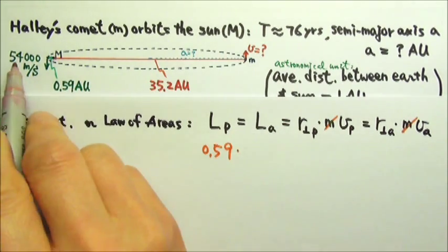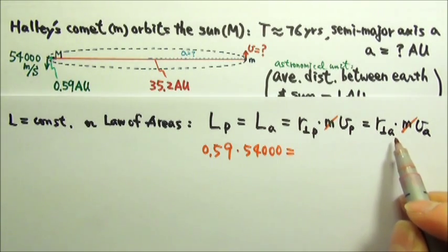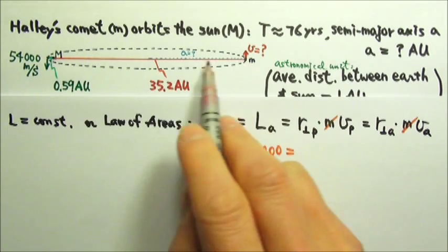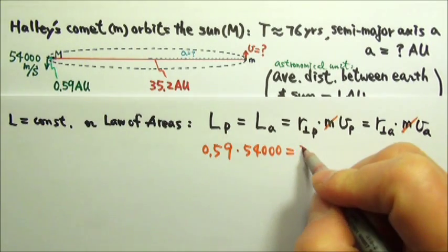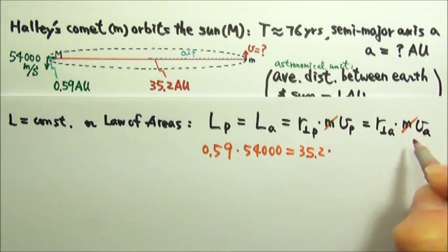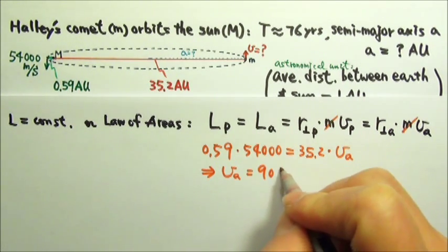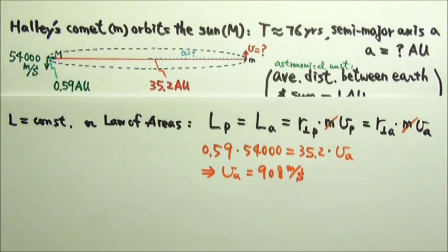And then at the aphelion, the r is the 35.2 AU, and the speed is what we're looking for. And therefore we can find the speed to be 908 m per second at the farthest point.